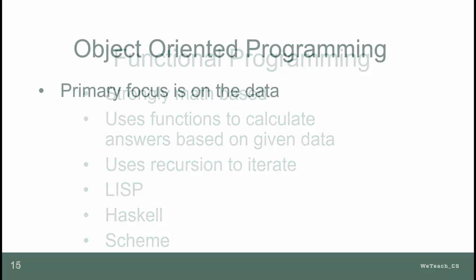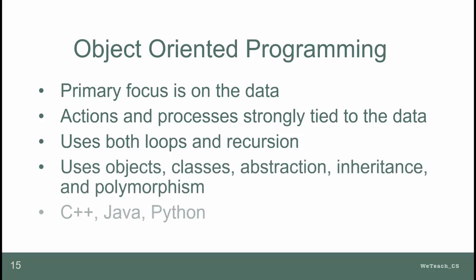The latest paradigm to emerge was object-oriented programming, where the focus was on the data, and where the actions and data were all bundled together in objects, defined in classes using abstraction, inheritance, and polymorphism as key features of the process. C++, Java, and Python are still in use as the primary languages that fit this mold.